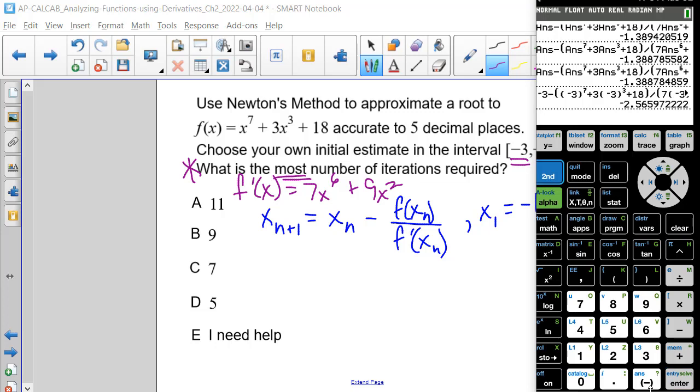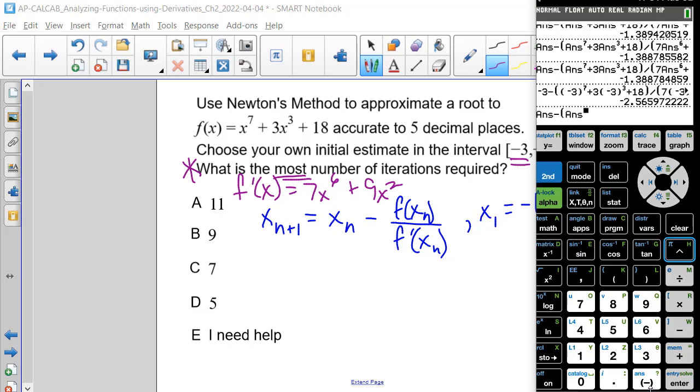Now we have to go through that answer. So we have the answer minus answer raised to the 7th plus 3 times the answer raised to the 3rd power. So we have the answer plus 18 divided by 7 times the answer raised to the 6th power plus 9 times the answer raised to the 2nd power. Close parenthesis.